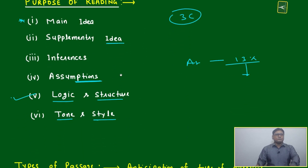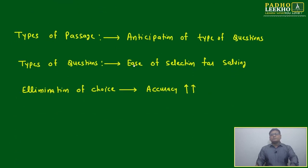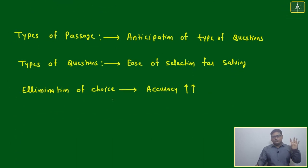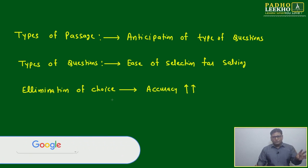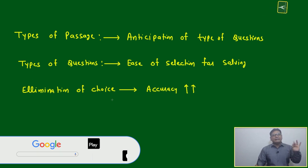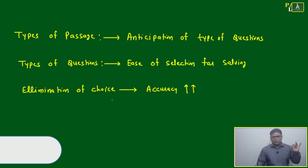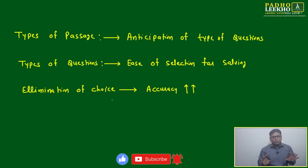Purpose of reading, types of passages, types of questions, selection of questions, elimination of options — and tools. We have to keep only one tool for each step for solving the RC. Just look, observe, get the data, and get out. Look, observe, get the data, solve the question, get out. Don't put your brain into it excessively.